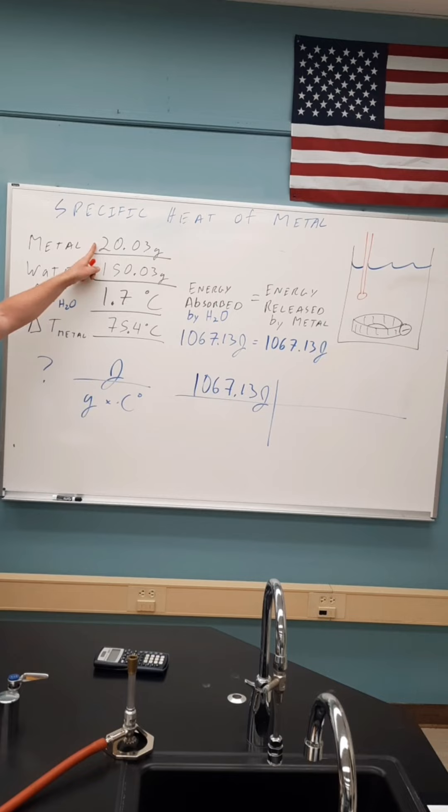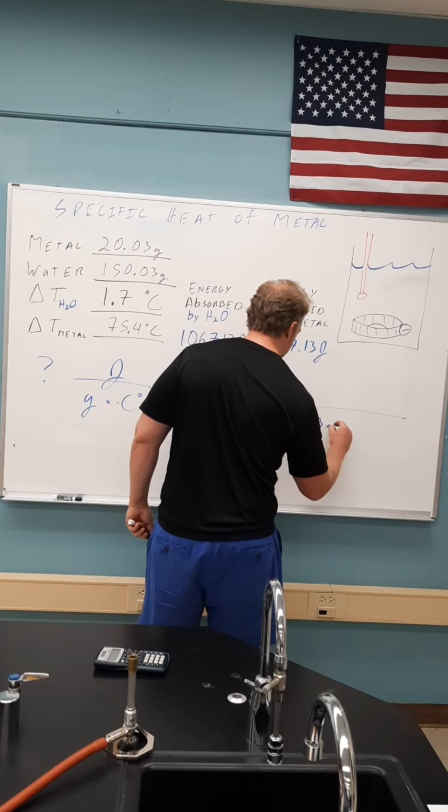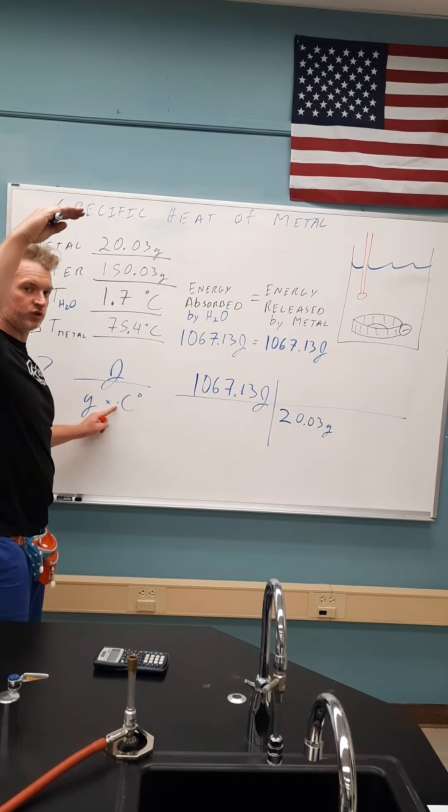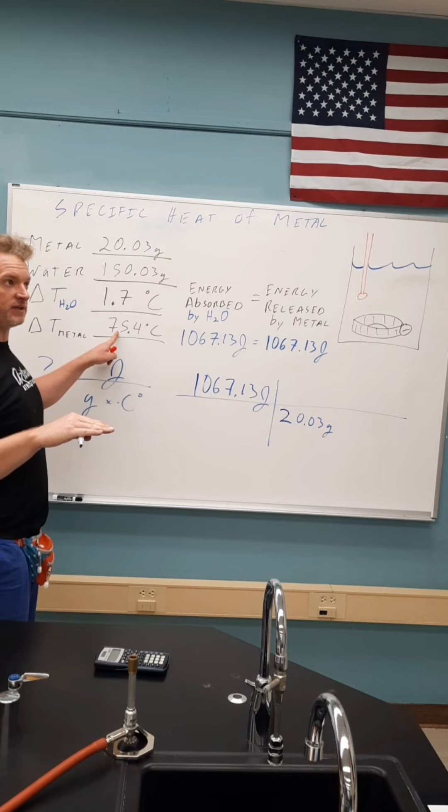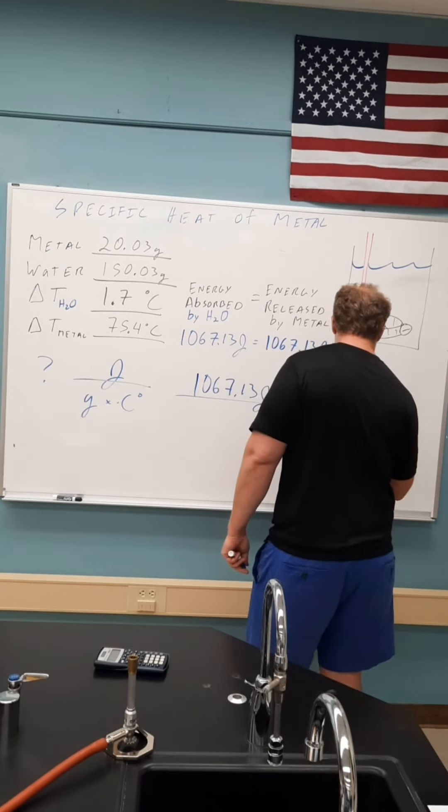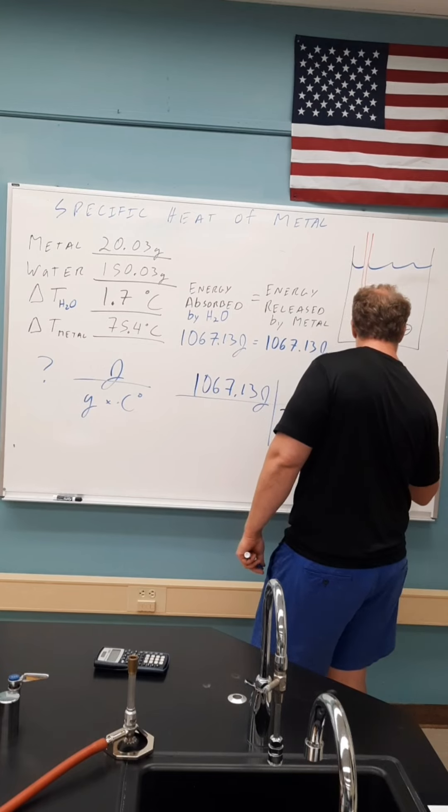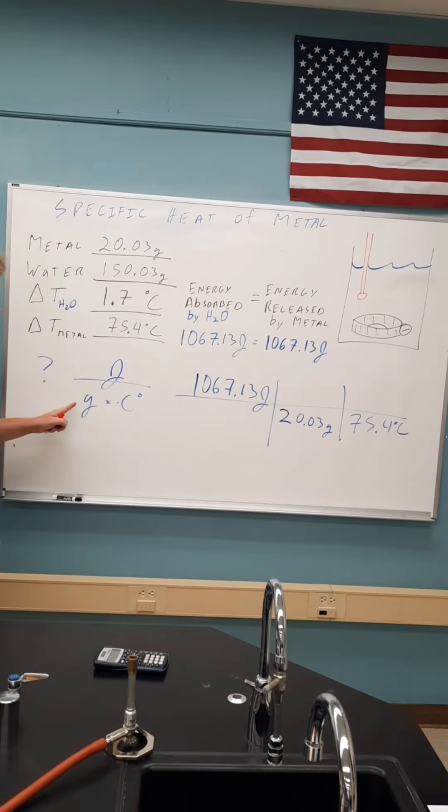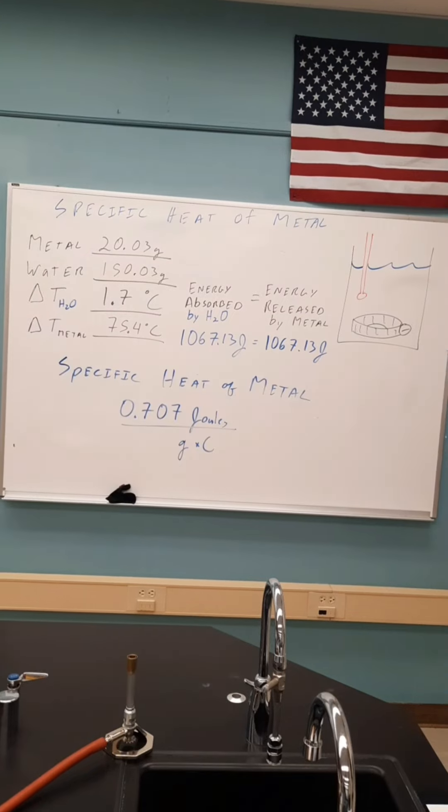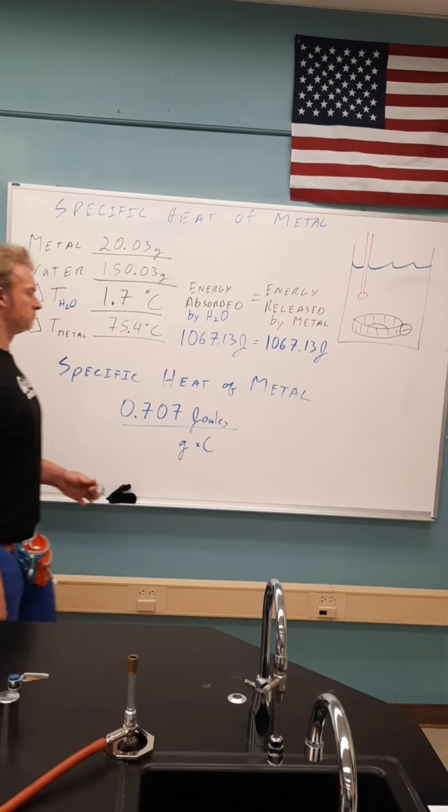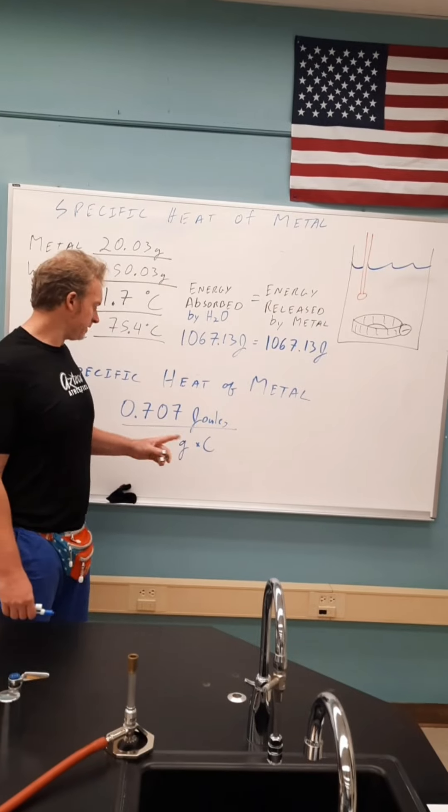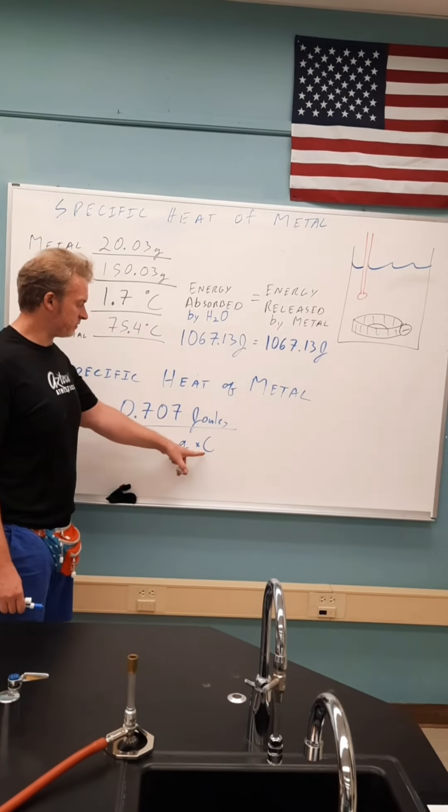Do I know the mass of the metal and do I know the temperature change of the metal? The mass of the metal was 20.03 grams and it has to go in the denominator. The temperature change of the metal was it started at 100 and went down to 24.6, so 75.4. These are all numbers about the metal and these are in the right order that we call specific heat. Our experimental value for the specific heat of the metal of this coupling here is 0.707 joules per gram degree Celsius.